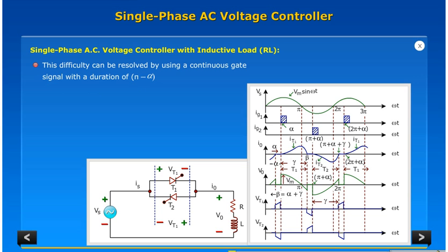This difficulty can be resolved by using a continuous gate signal with a duration of pi minus alpha. However a continuous gate pulse increases the switching loss of thyristor. In practice a short duration of train pulses are used to overcome this problem.